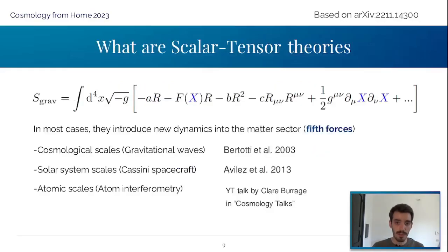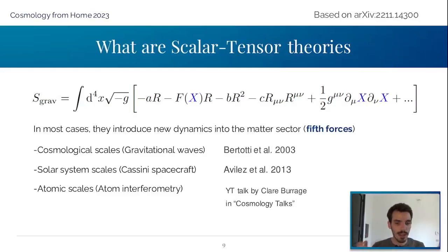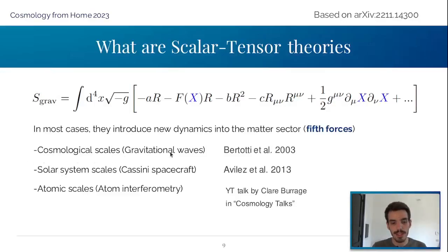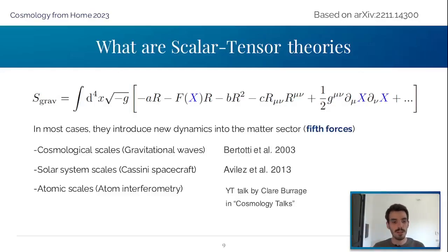Changing the gravitational action is not free — it introduces new dynamics into the system, called fifth forces in cosmology. These have been studied quite a lot and constrained. For example, on cosmological scales they can produce gravitational waves; on solar system scales they have been constrained by the Cassini spacecraft by measuring ray lights from it to the Earth; and it has also been proposed to study them at atomic scales using atomic interferometry.